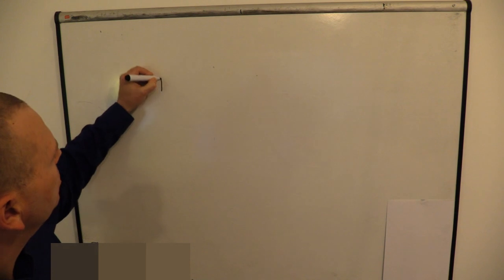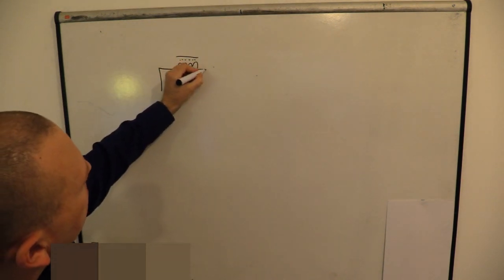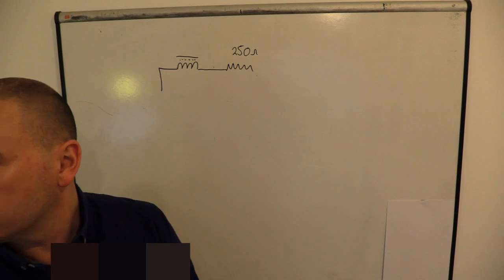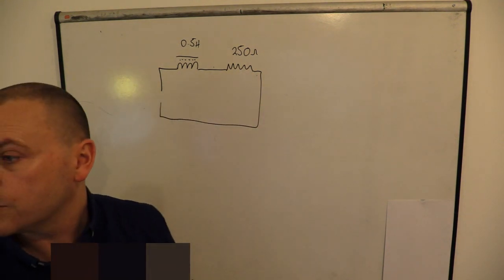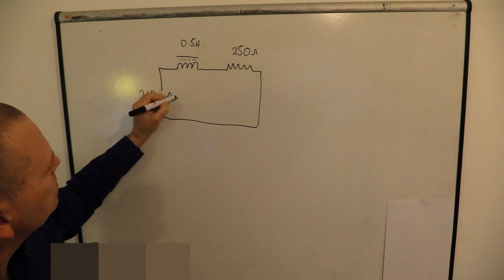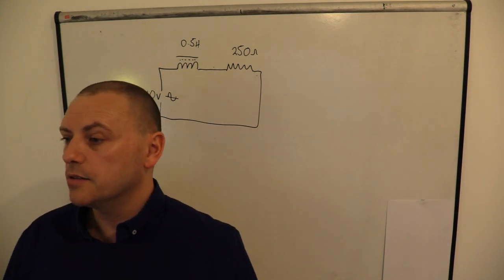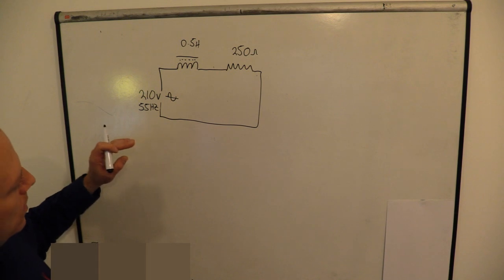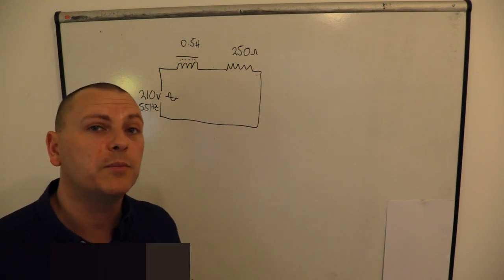So I'm just going to draw that circuit again on my board. We've got a resistor of 250 ohms, and the inductor size is 0.5 henries, going all the way around and back to the source, which was 210 volts AC and 55 hertz. Frequency is going to be important for working out our inductive reactance, so let's start there, because it's really the first thing we should be trying to get.